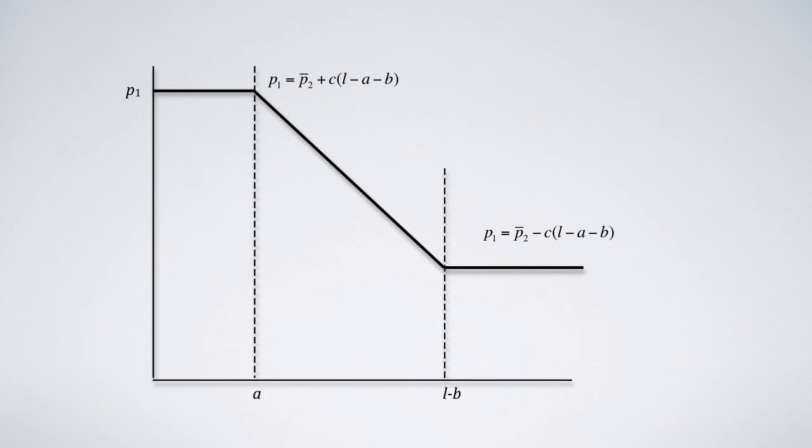The maximum price that seller 1 can set is when Q1 equals A, and the lowest is when Q1 equals L minus B. In our example, the highest price is 32, and the lowest, 8.